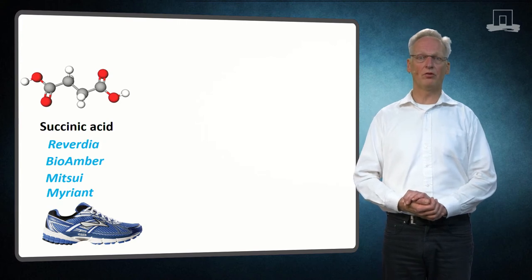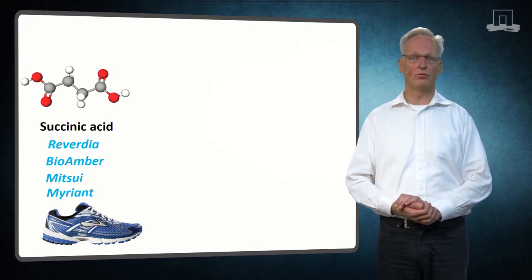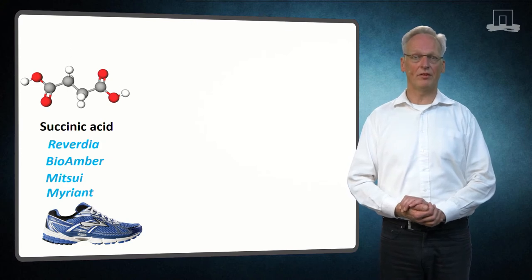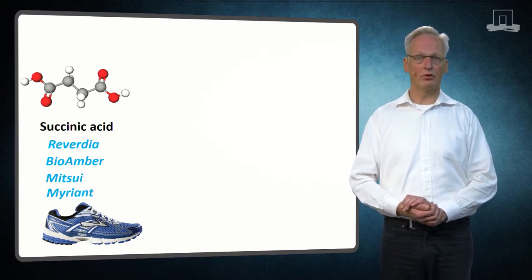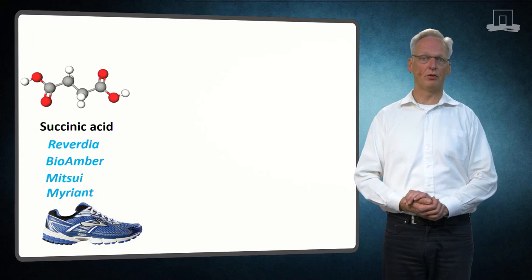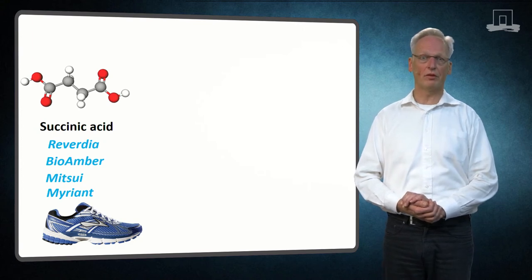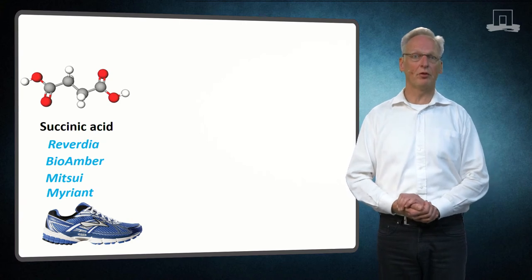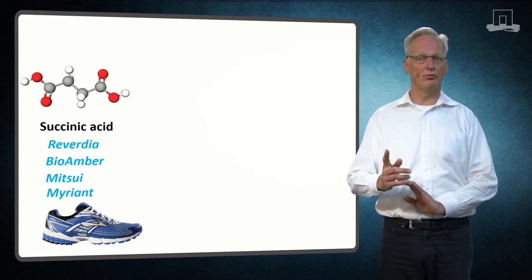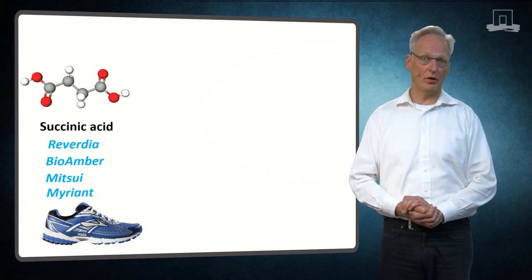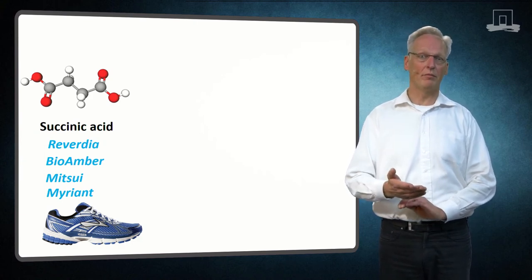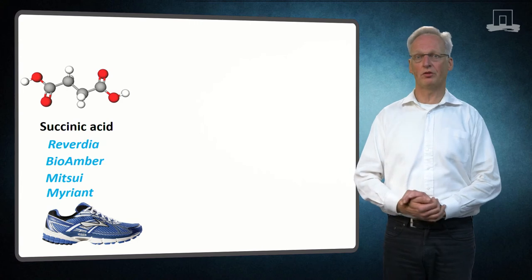C4-containing compounds include succinic acid, 1,4-butanediol, isobutane, and methyl methacrylate. Bio-succinic acid is produced by bacterial fermentation. There is a rapidly growing market, replacing actually the original petrochemical product already. French Reverdia is a global market leader with their brand Biosuccinium. But it has BioAmber, Mitsui, and Myriant as serious competitors.